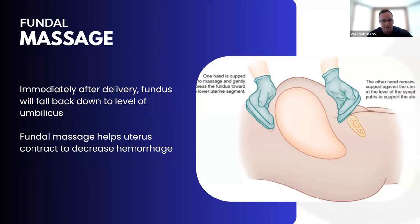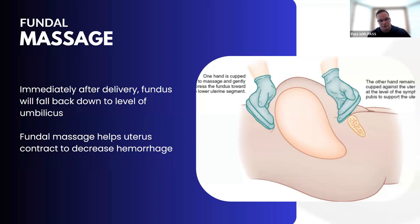Immediately after delivery, the fundus falls back down to the level of the umbilicus. This is important because a fundal massage may be needed to decrease postpartum hemorrhage. Don't go looking for the fundus near the xiphoid process after delivery — it's already moved back down to near the belly button. Cup one hand below the fundus for stability, place the other hand on top, and massage to cause uterine contraction and reduce postpartum hemorrhage.